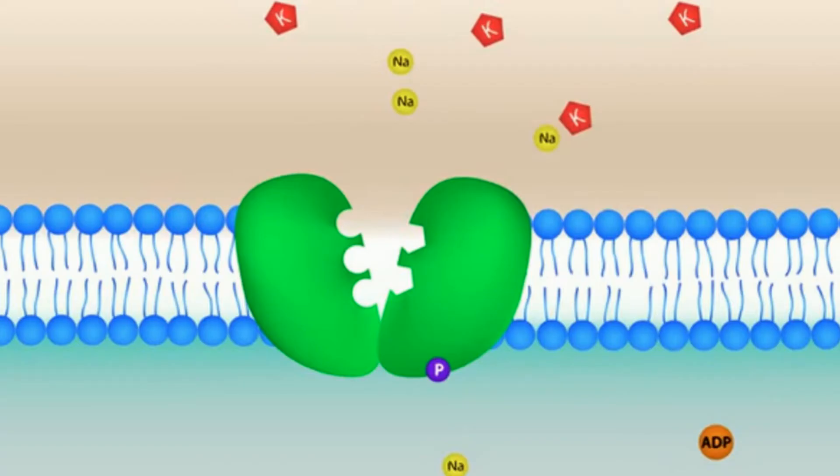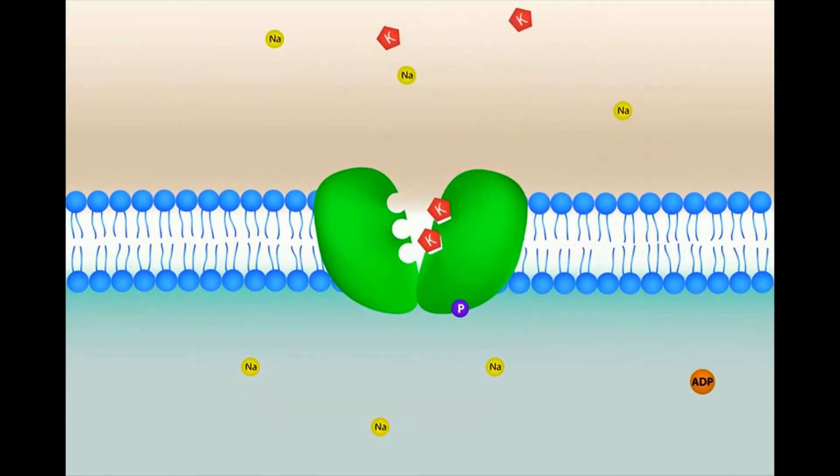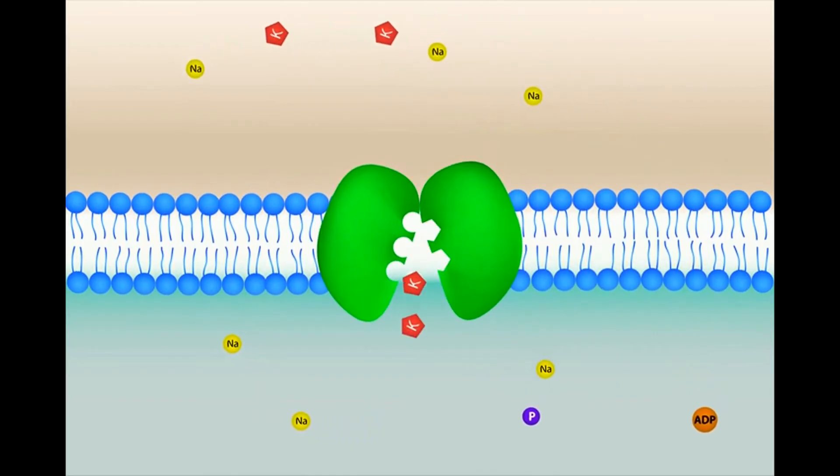This new shape also allows two potassium ions outside the cell to bind with the carrier protein and move inside.